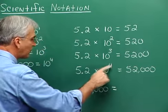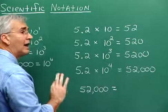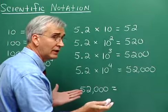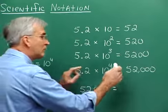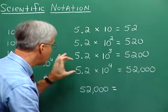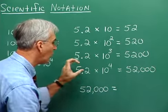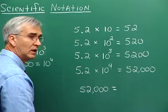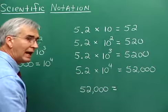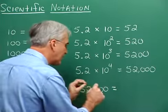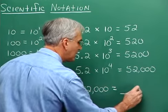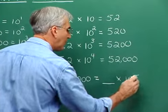And if the exponent is four, move the decimal four over. Now we're ready to rewrite numbers in scientific notation — we're going to reverse this process. We take this number and write it in a form which is a number between one and ten, times ten to some unknown exponent.